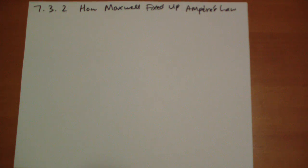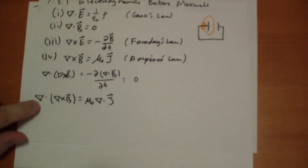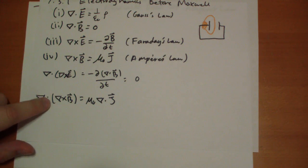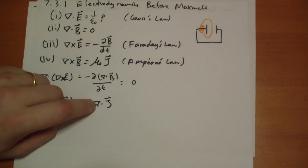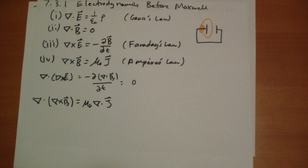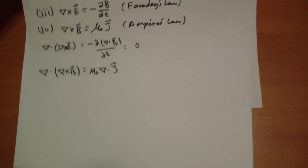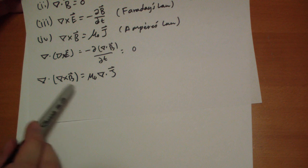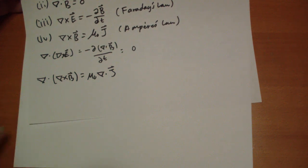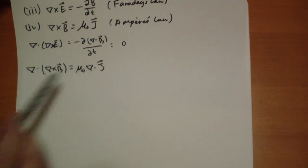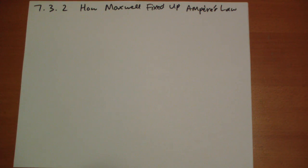Section 732. This is how Maxwell fixed up Ampere's Law. Remember, we just had this problem that the divergence of the curl of B was definitively not zero. We can introduce a new term into the curl of B so that when you take the divergence of it you do get zero — something to oppose this divergence.